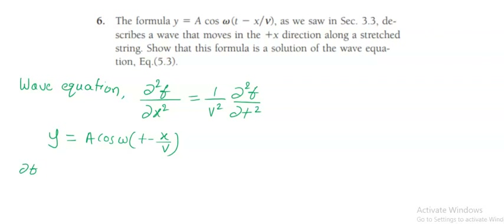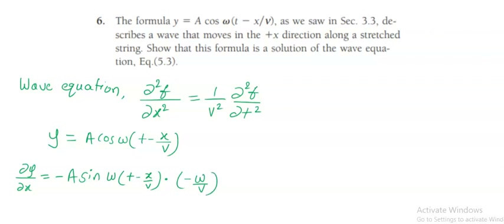So dou y divided by dou x — this is the first order partial derivative. We have y equal to A cos(theta), so the derivative is negative A sin(theta), that is omega times (t minus x by v). Again we differentiate omega times (t minus x by v) with respect to x. Here t is a constant, so the derivative of t with respect to x is 0, and the derivative of negative x by v with respect to x gives negative 1 by v. So dou y by dou x equals A omega divided by v, times sin of omega times (t minus x by v).